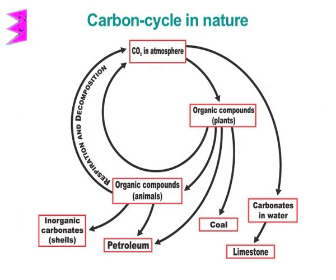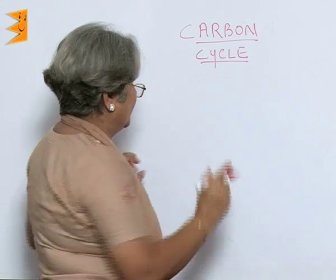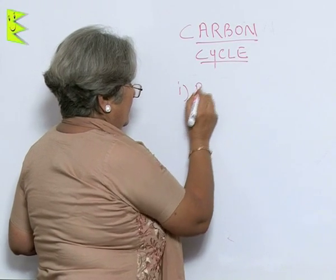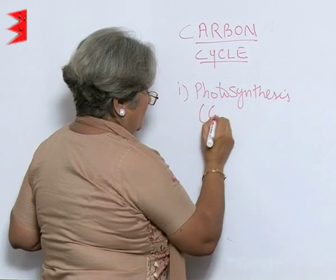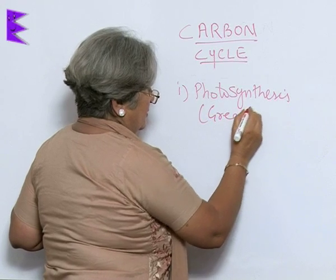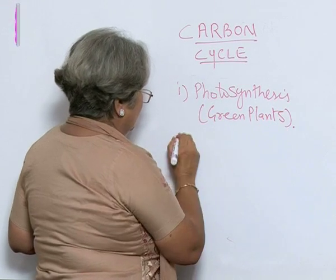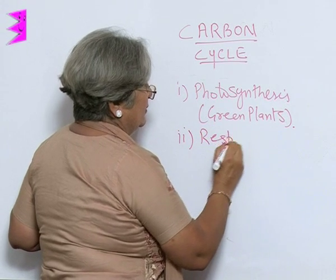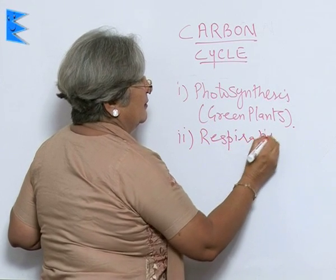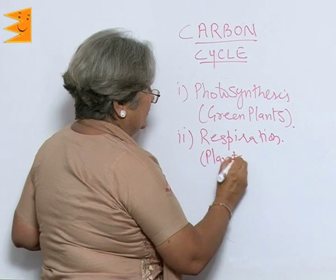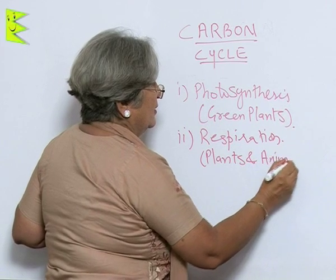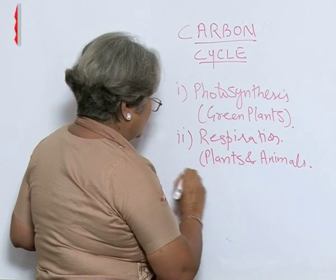So when counting the processes involved in the carbon cycle, we have: first, photosynthesis done by green plants; second, respiration by plants as well as animals; and third, combustion.